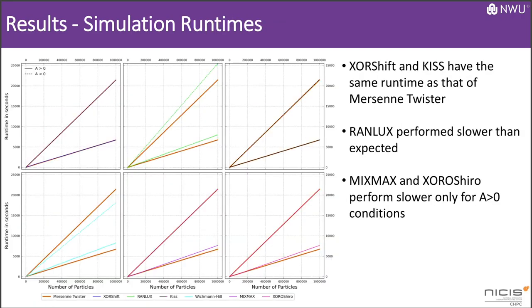Lastly, the run times for the different generators were plotted, with the solid lines being for conditions where the current sheet tilt angle is positive and the dashed lines being for those of negative tilt angles. It can clearly be seen that RanLux gets an easy disqualification due to slower run times across the board, and that at least in terms of performance, KISS and XORshift make the most compelling case as substitutes. Interestingly, MixMax and Xoshiro perform slower only when the current sheet tilt angle is greater than zero.